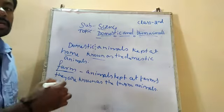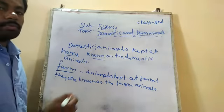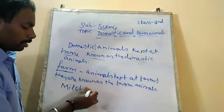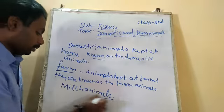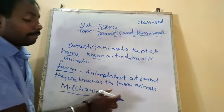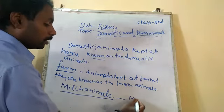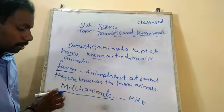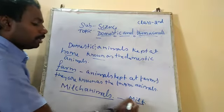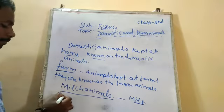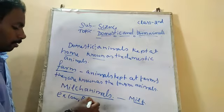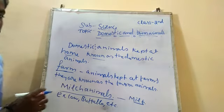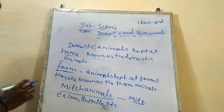Children, some animals give milk — for example, the cow and the buffalo. They are known as milch animals. Milch animals means the animals that give milk. Examples are cow, buffalo, etc.